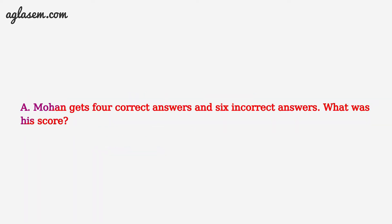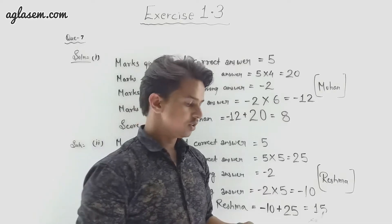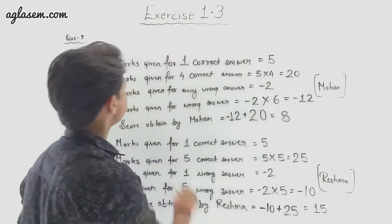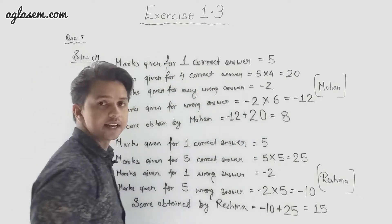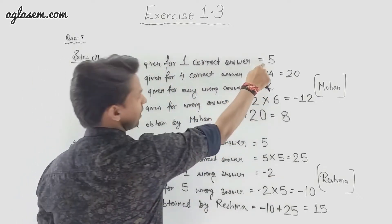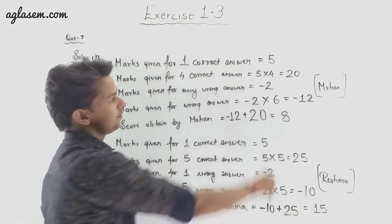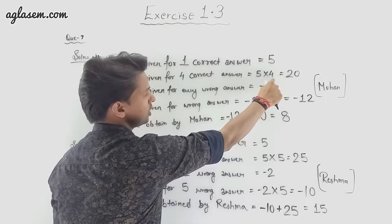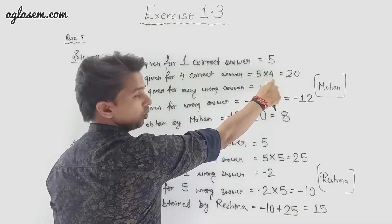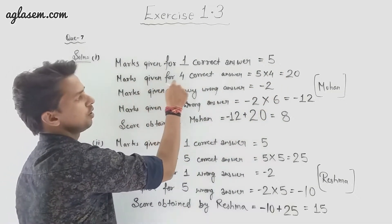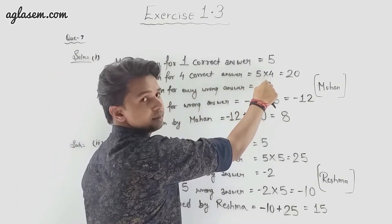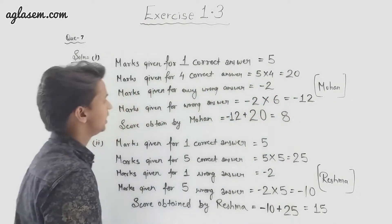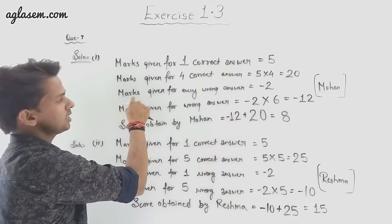Marks given for one correct answer is 5. Mohan has 4 correct answers, so marks given for 4 correct answers is 5 multiplied by 4, which equals 20.